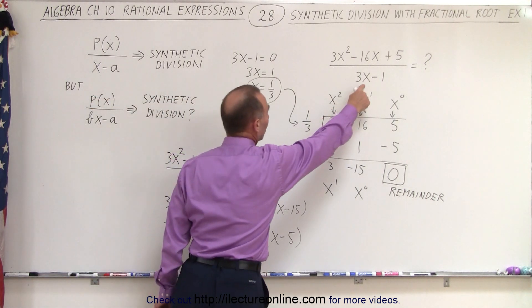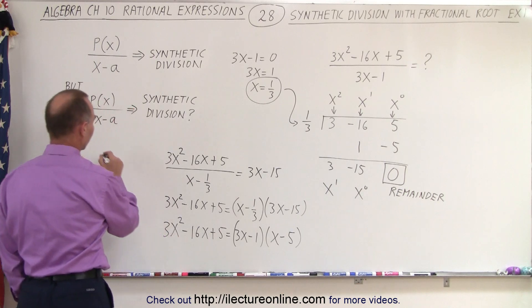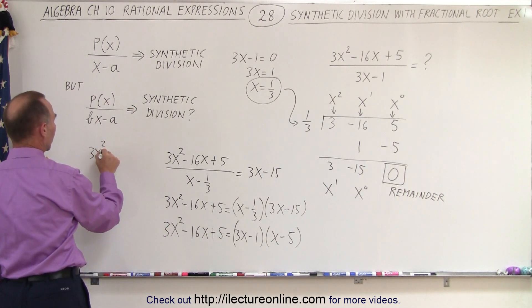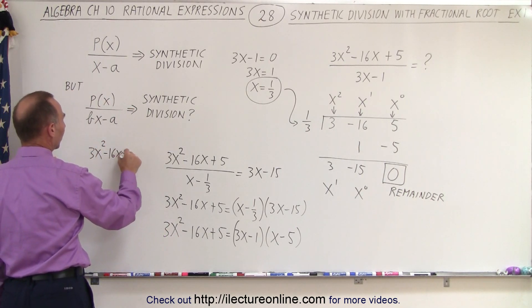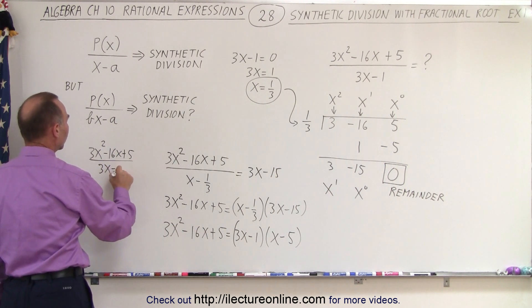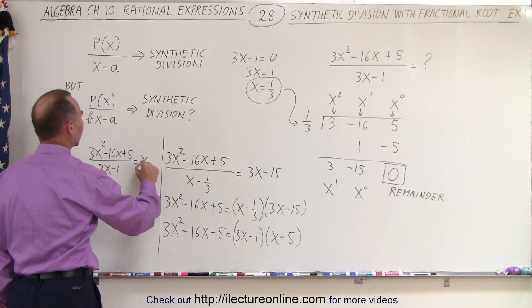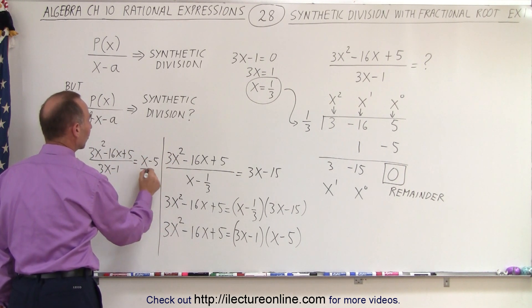Notice we still have the 3x minus 1. And then we can say, in the end, that 3x squared minus 16x plus 5 divided by the 3x minus 1, which is then equal to, let me put a line in here, x minus 5. And that's then the solution.